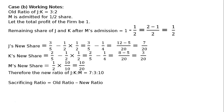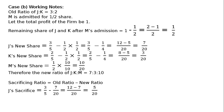Sacrificing ratio equals old ratio minus new ratio. J's sacrifice equals 3/5 minus 7/20. With LCM 20: 12 minus 7 = 5/20. K's sacrifice equals 2/5 minus 3/20. With LCM 20: 8 minus 3 = 5/20. Therefore, sacrificing ratio of J to K equals 5 to 5, which simplifies to 1 to 1.